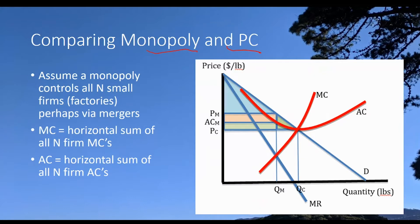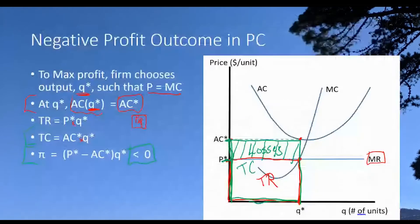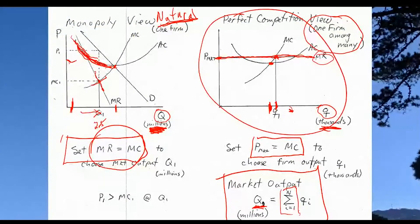So what I'm going to do here is draw a comparison between the two by imagining something in reverse. Imagining we take all of the little firms that are producing here, all of these firms, and we just sort of sum up their products, their marginal costs and average costs across all of them.